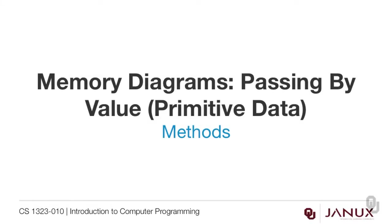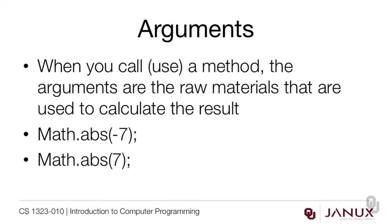Let's take a look at memory diagrams to explain how passing by value works for primitive data. The first thing you need to know is the difference between arguments and parameters. When you call, which means use, a method, the arguments are the raw materials that are used to calculate the result. For example, I can call the math.abs function — abs stands for absolute value — with an argument of negative 7, and it will return 7. Or I could call it with math.abs of 7, and it will also return 7 because the absolute value of both negative 7 and 7 is 7.